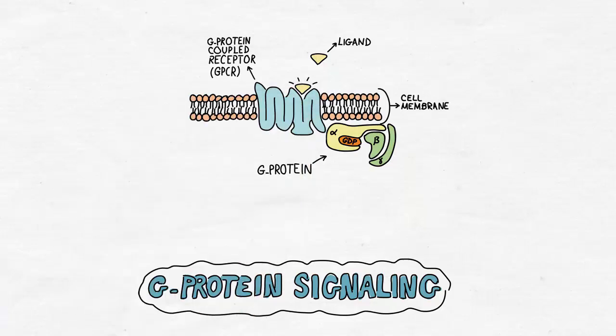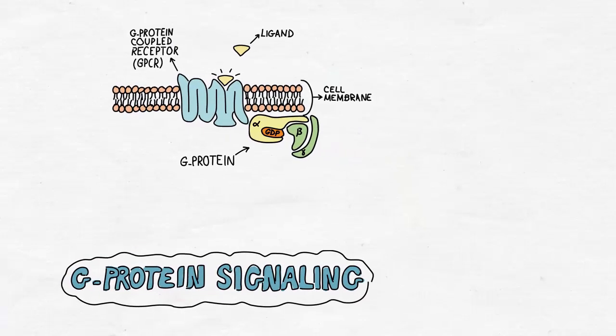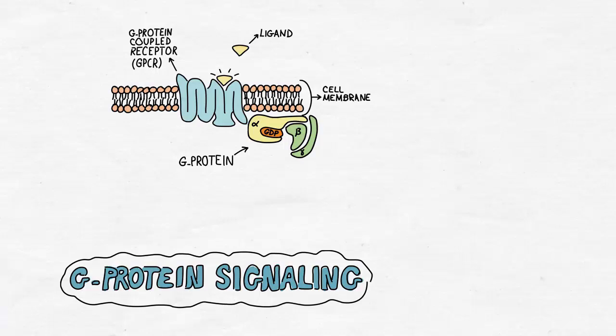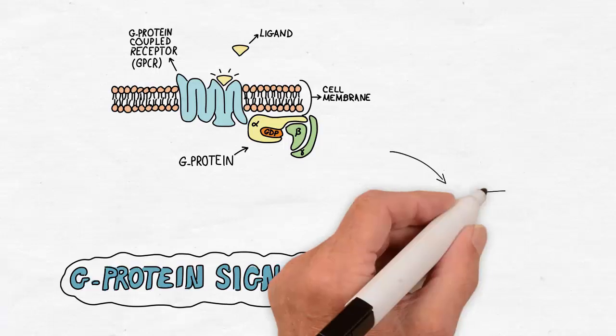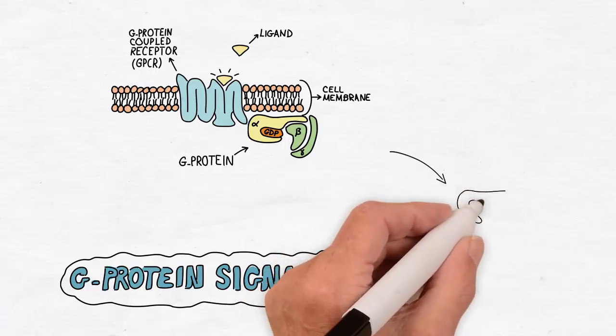The GPCR is a transmembrane protein with seven membrane spanning regions or helices. Upon activation the GPCR undergoes a conformational change making it able to interact with the G-protein.